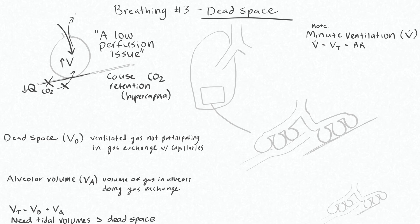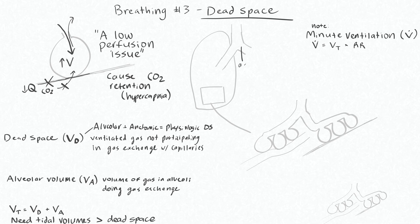The volume of dead space is defined as the ventilated gas not participating in gas exchange with the capillaries. This is the combination of alveolar dead space, which we've just shown, and anatomic dead space — together called physiologic dead space. Anatomic dead space is anywhere in your airways not designed for gas exchange: your trachea, bronchus, and bronchioles. The typical physiologic dead space is about 2 mL per kg in an average-sized upright adult, equating to about 150 mL.